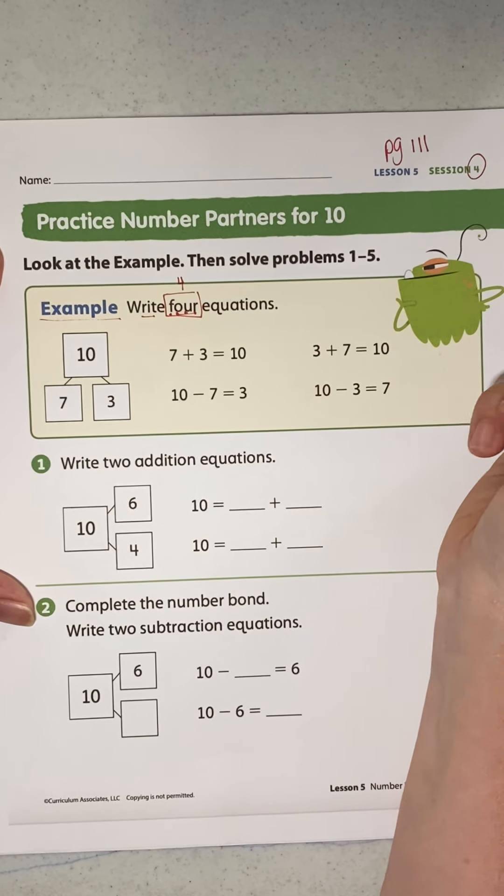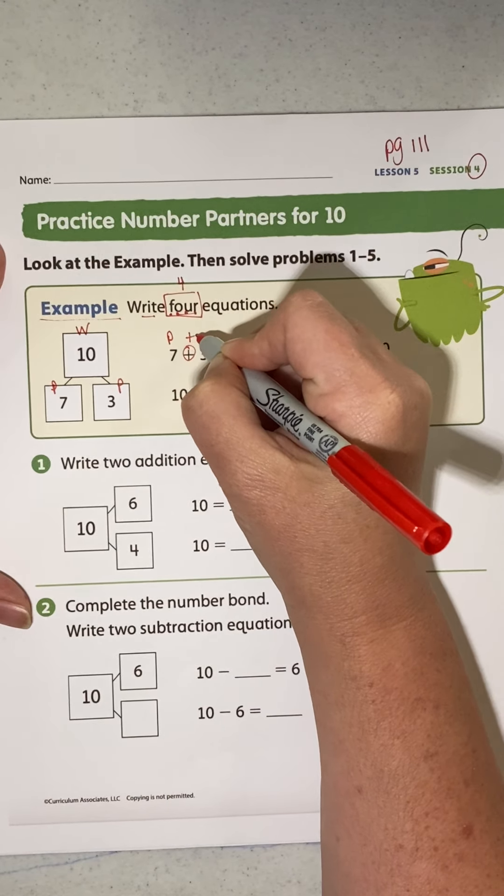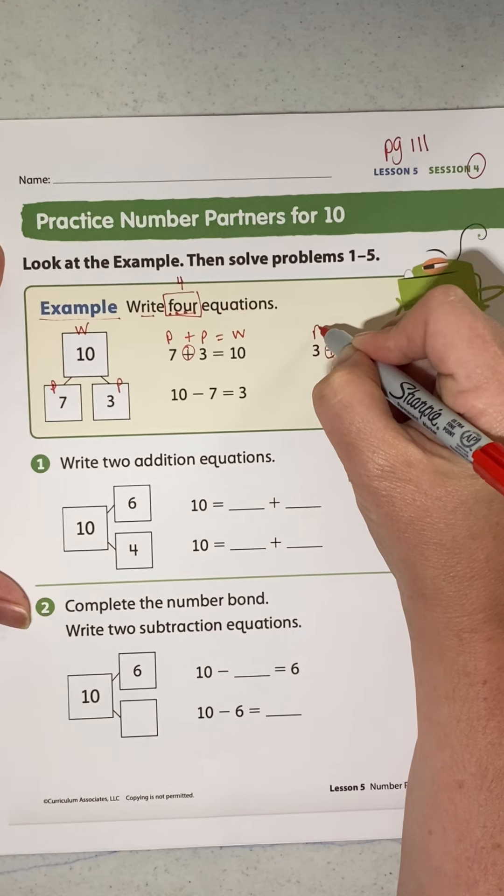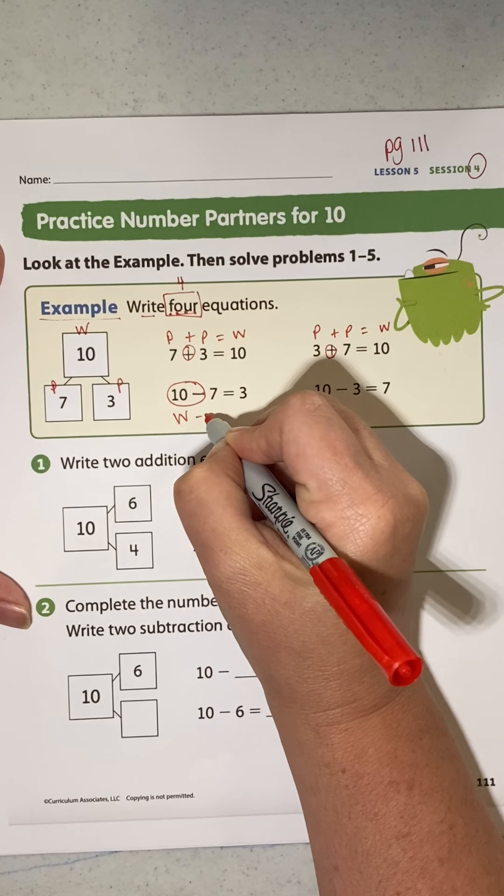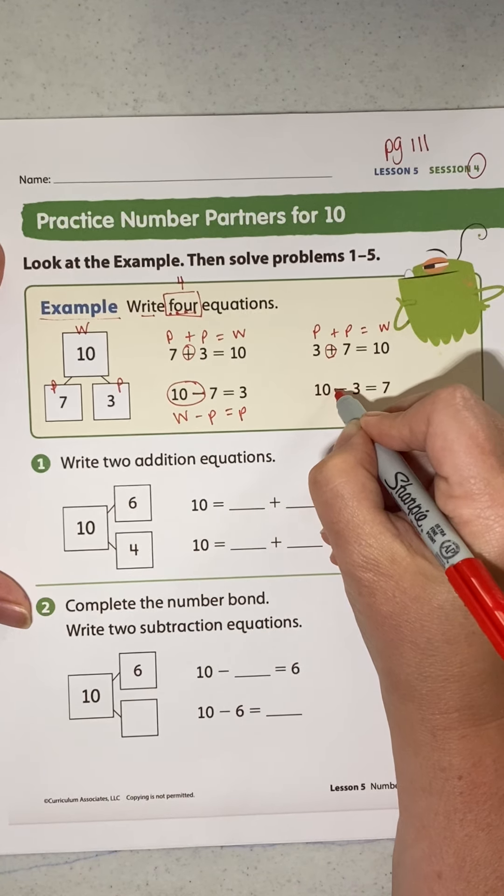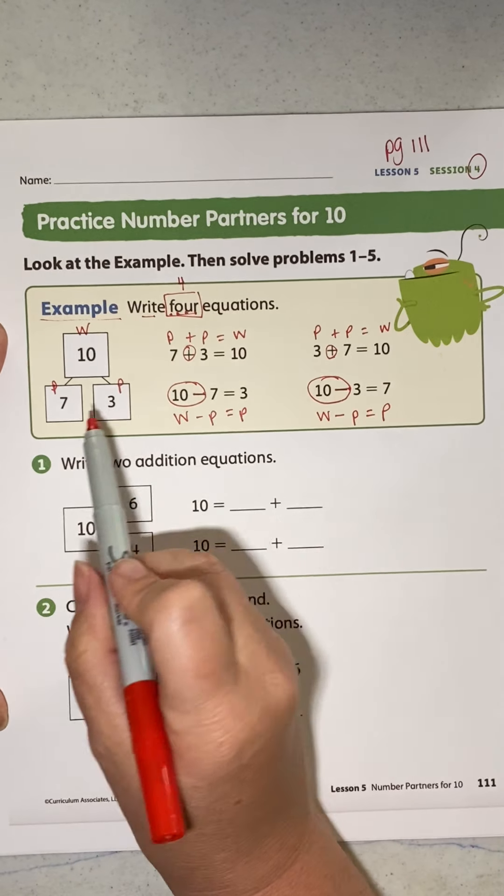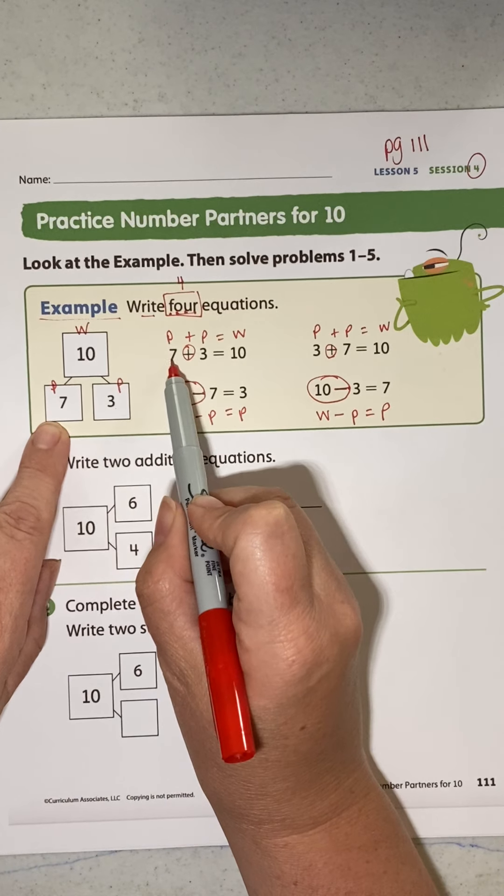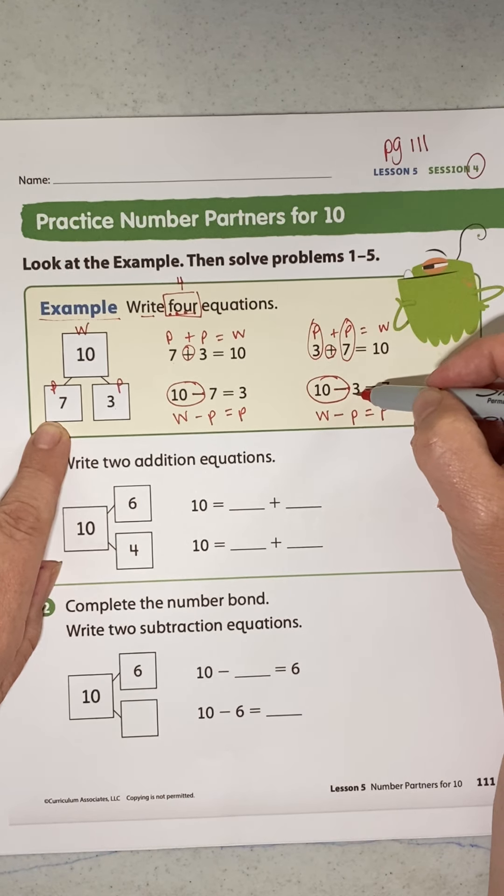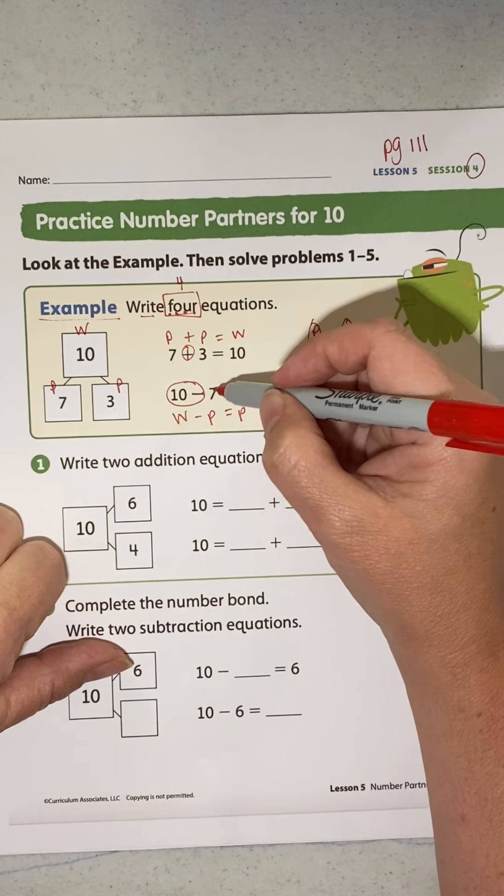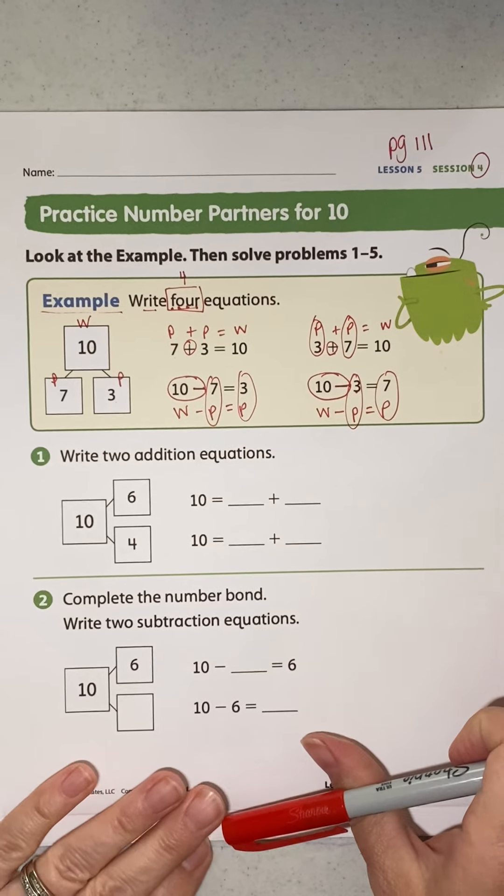Okay, first we have to go through and label part, part, whole. Whole, part, part. Part plus a part equals a whole. Part plus a part equals a whole. Whole minus a part equals a part. Whole minus a part equals a part. Okay, so if you can see that 7 and 3 are your parts. 7 is a part, 3 is a part. So that never, ever changes. If you know how to label your part, part, whole, you're going to get your answers correct every time.